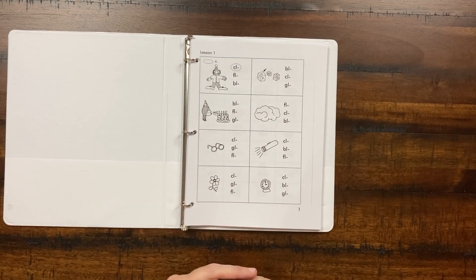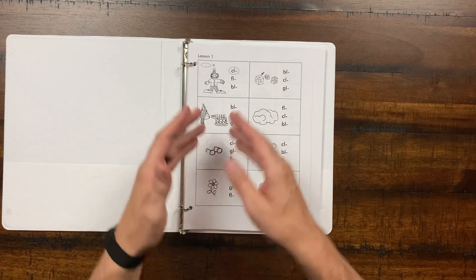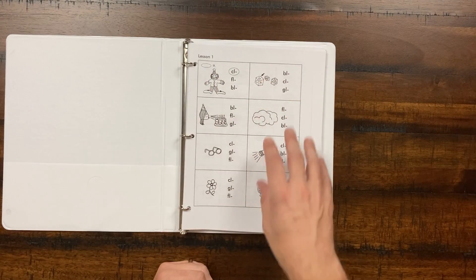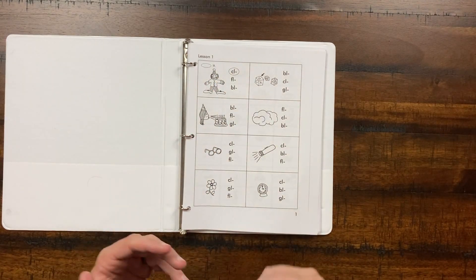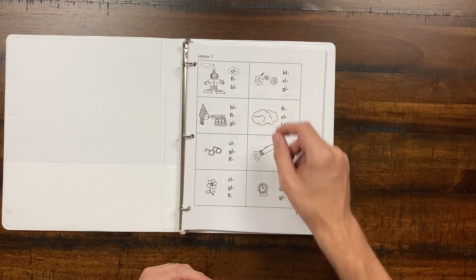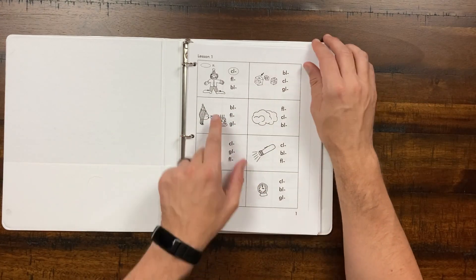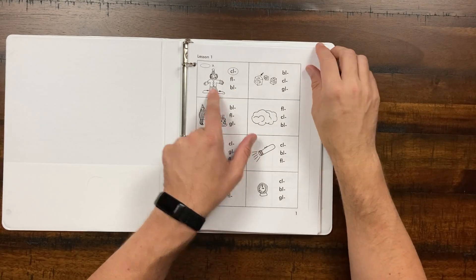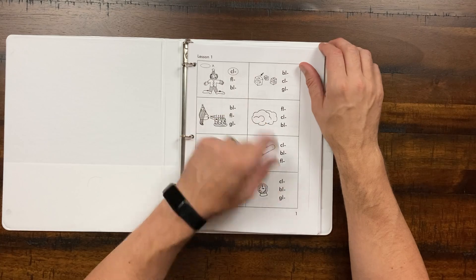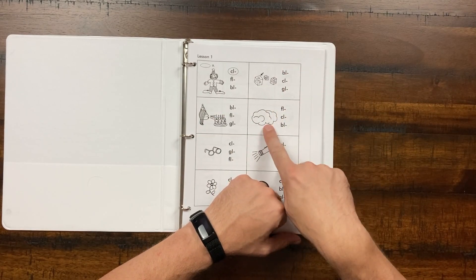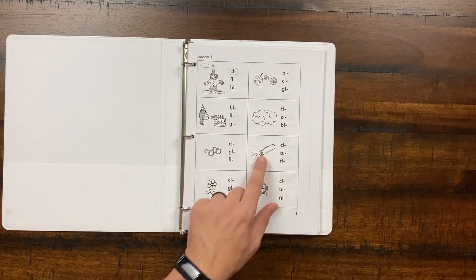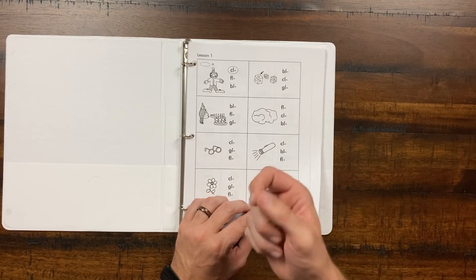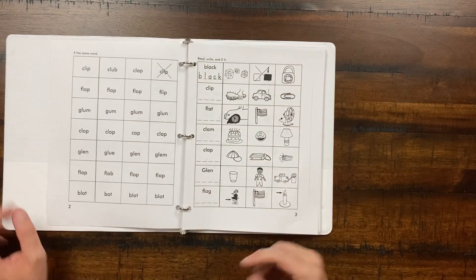So here we are in lesson one. Explode the Code tends to have just basically a handful of activities per page, and they're very often asking the learner to circle things, to identify things. In this case, we're looking at the image, and we're trying to find the letter combination that matches the image. So obviously, this is a clown, so you will circle the CL. Here's a block, so we'll do the BL. Here's a cloud, another CL. Here's a flashlight, FL, glasses, GL. So we're looking for those consonant L combos, and that is the main focus here.